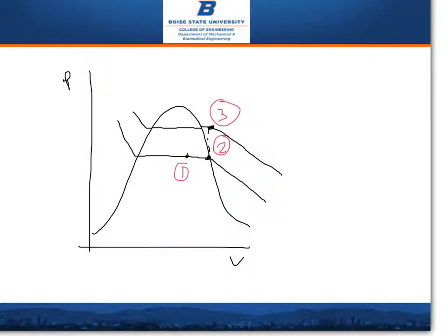So for the PV diagram, it starts off where you have state 1 which is underneath the curve, and it is at a saturated mixture at 0.8 quality.